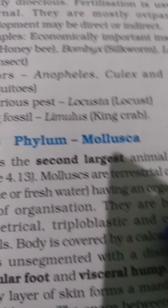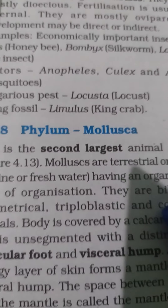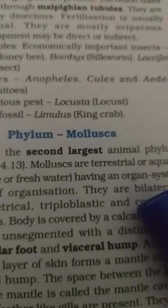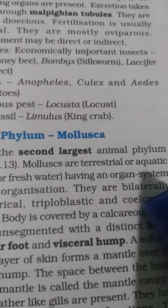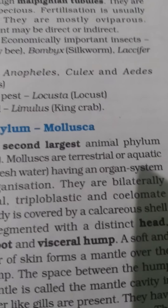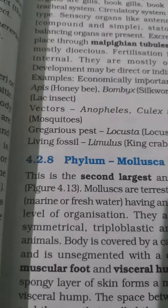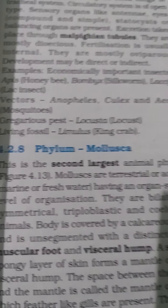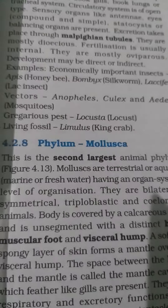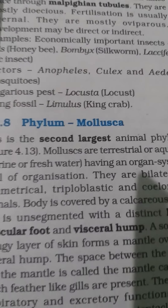The next phylum is Phylum Mollusca, which is the second largest phylum. Its phylum character includes the presence of a shell, and the organisms are especially marine and freshwater — they are either marine or amphibious in nature.